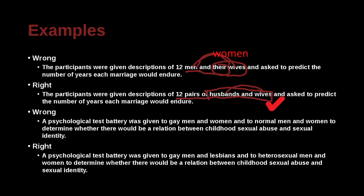The psychological test battery was given to gay men and women and to normal men and women to determine whether there would be a relation between childhood sexual abuse and sexual identity. The correct sentence: the test battery was given to gay men and lesbians, and to heterosexual men and women. So what we've done here is just made it equivalent.